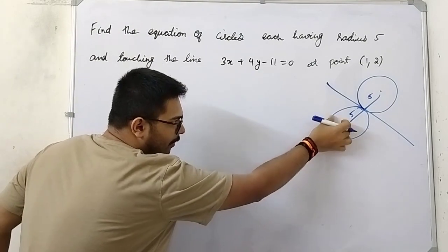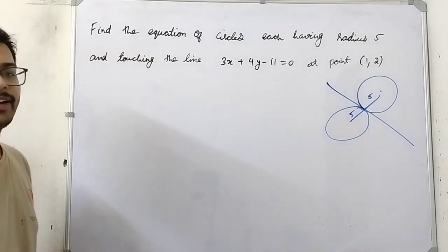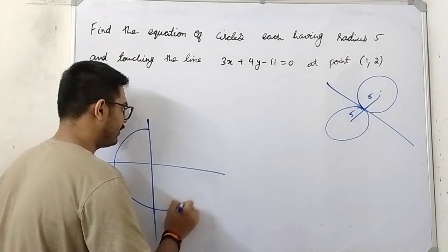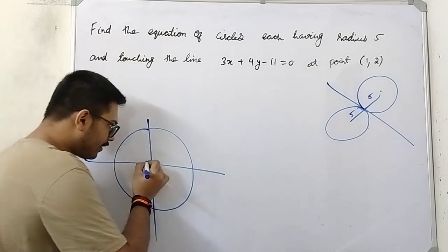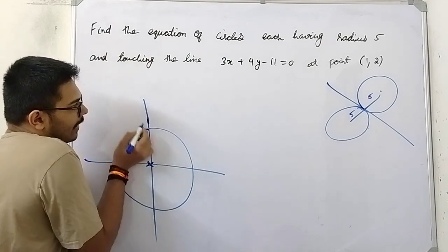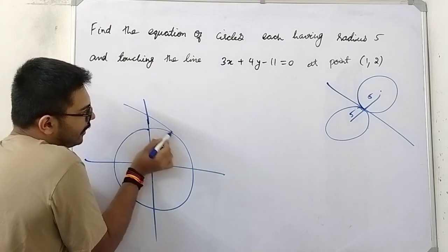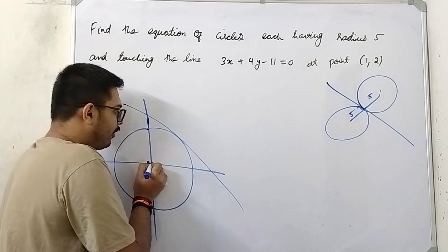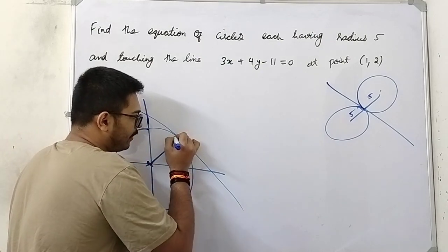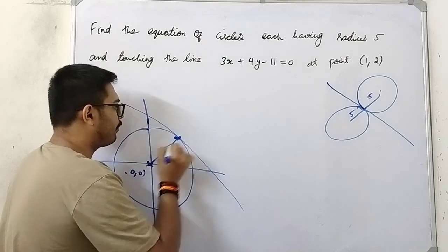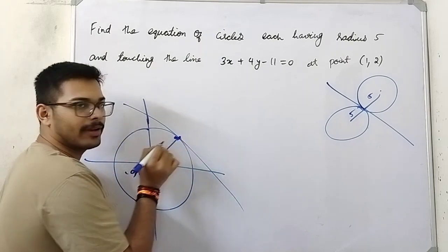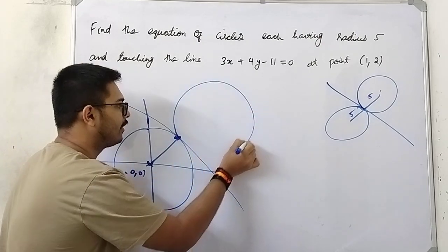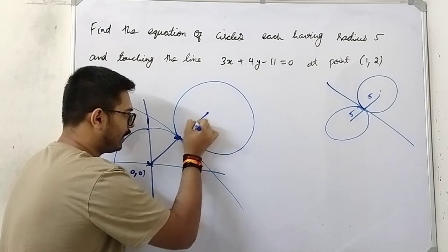Assume that this particular circle has its center at the origin. Now we can draw a tangent, and if you draw a line from the origin to the tangent, it will be perpendicular, because the tangent is always perpendicular to the radius. Similarly, the other circle will be placed like this, also with radius 5 units.